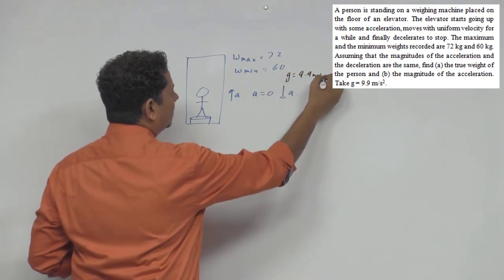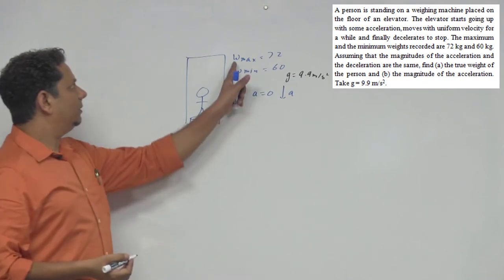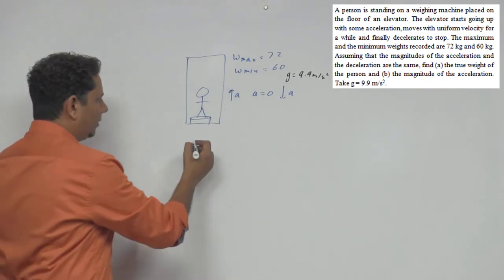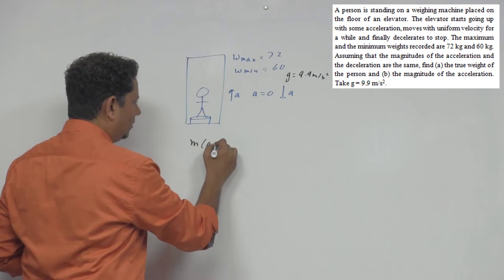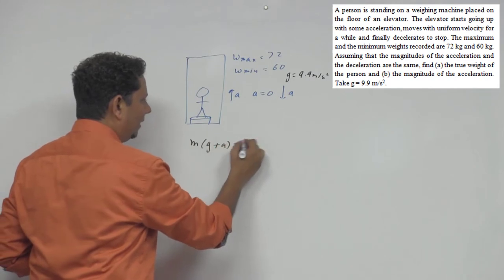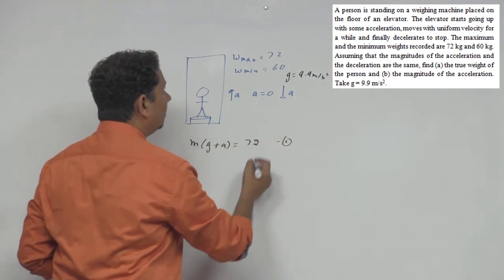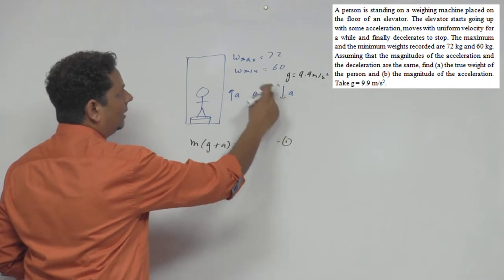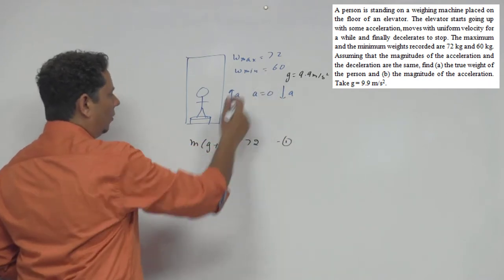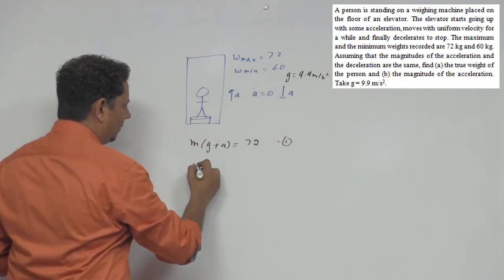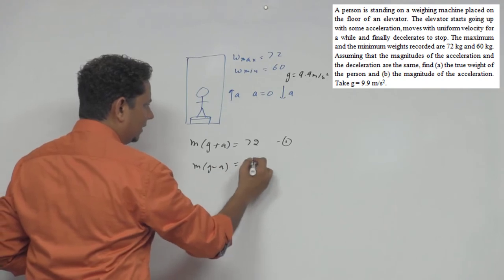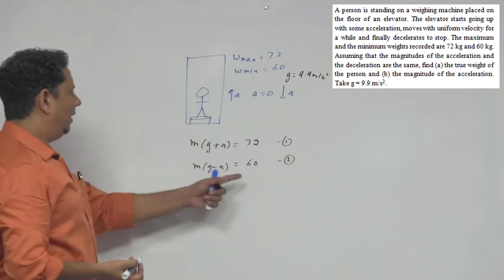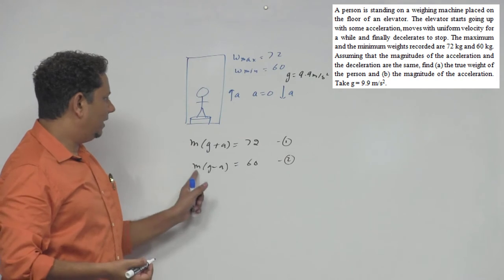We know that when the lift is going up with acceleration a, the apparent weight is m(g + a), which equals 72 — this is our first equation. And when it is coming down (decelerating), the acceleration is downward, so the apparent weight is m(g − a), which equals 60 — this is our second equation.